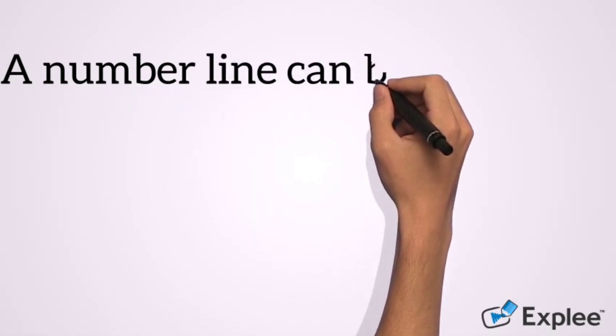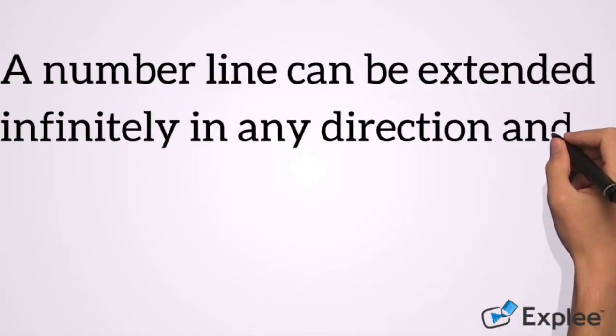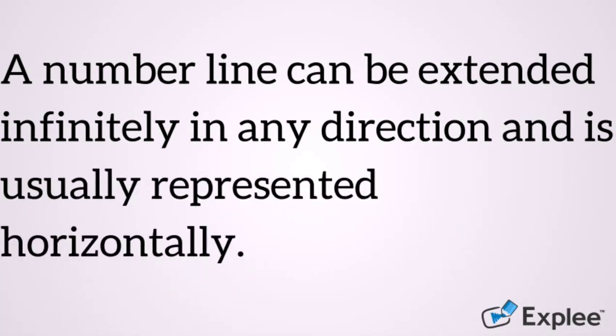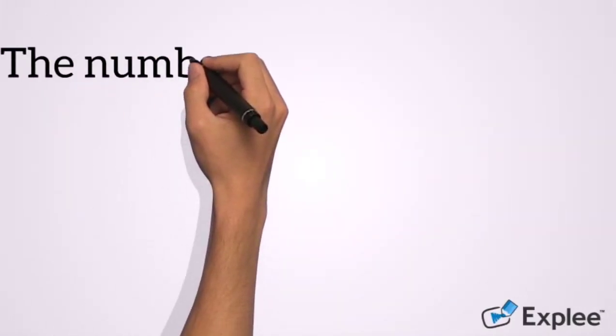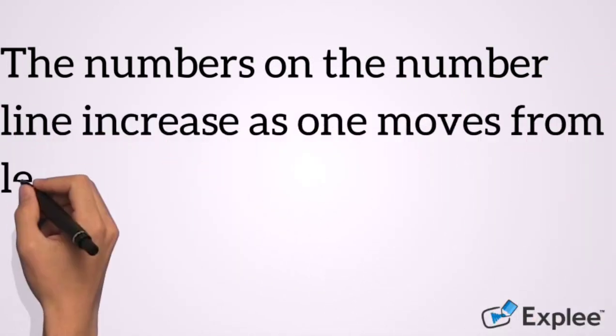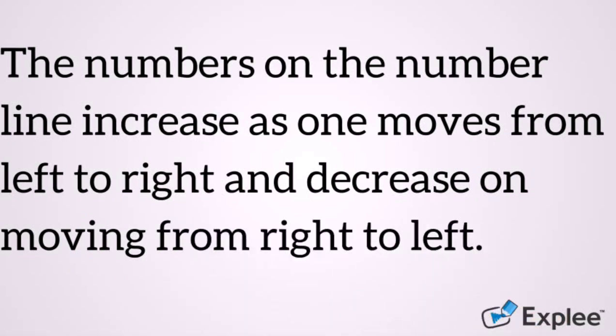A number line can be extended infinitely in any direction and is usually represented horizontally. Infinitely means never ending, it continues on and on. The numbers on the number line increase as one moves from left to right and decrease on moving from right to left.